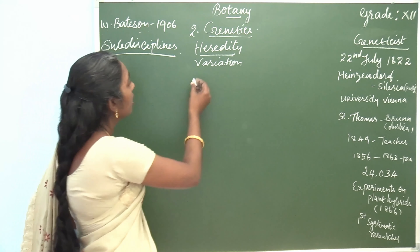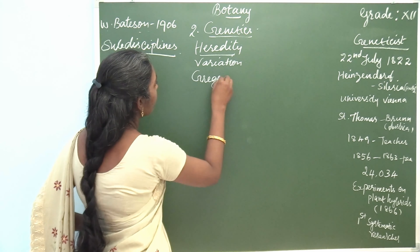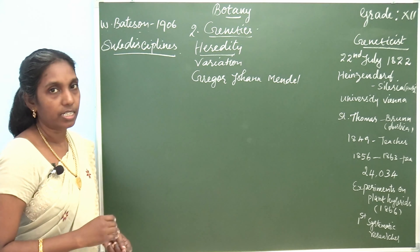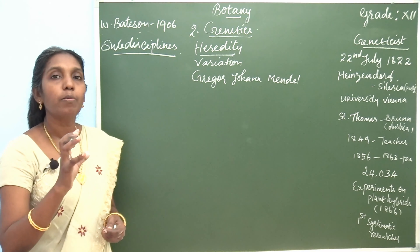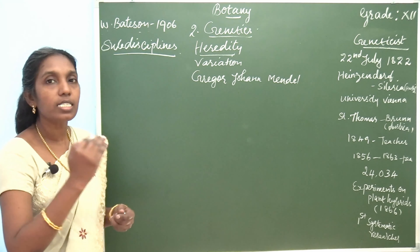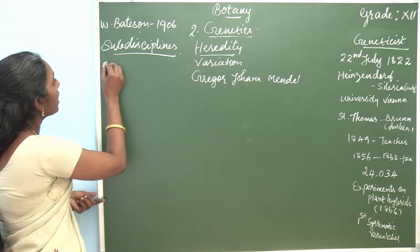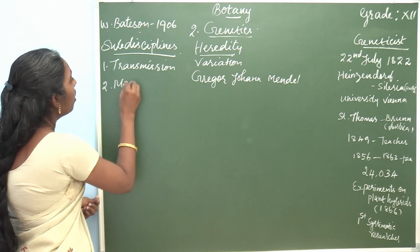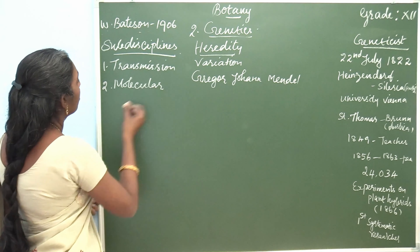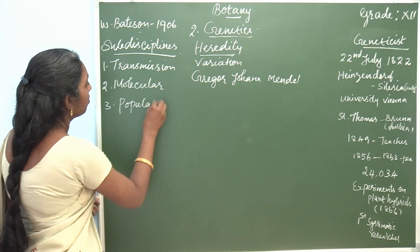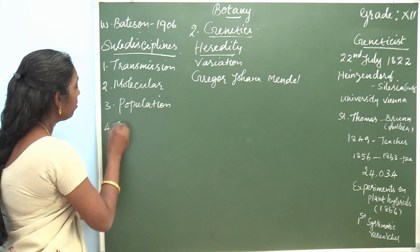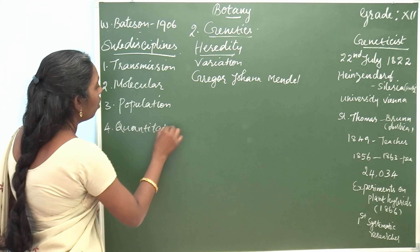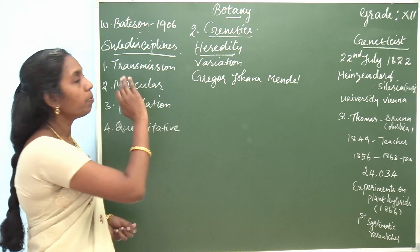And who was the father of genetics? Gregor Johan Mendel was the father of genetics. There are four sub-disciplines in genetics: transmission genetics, molecular genetics, population genetics, and quantitative genetics.